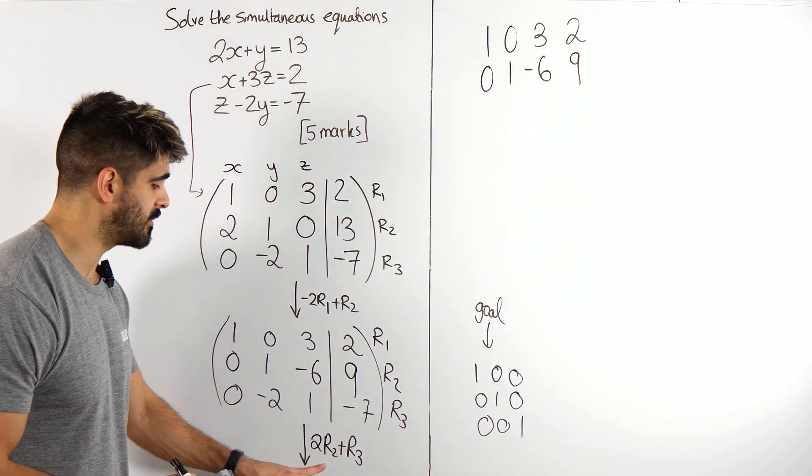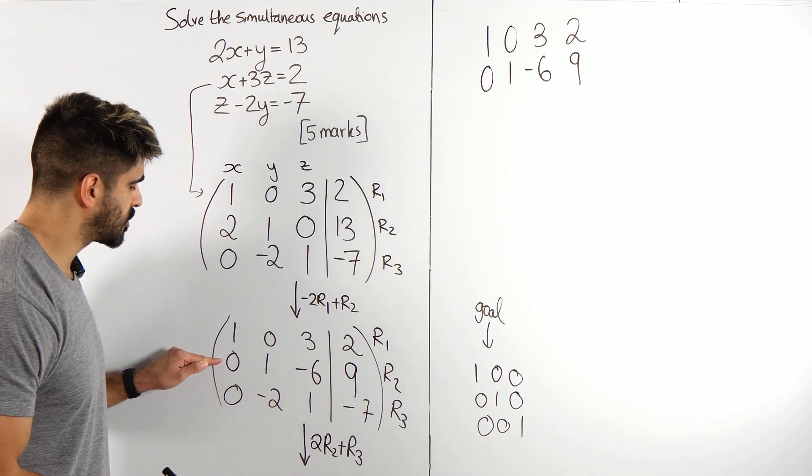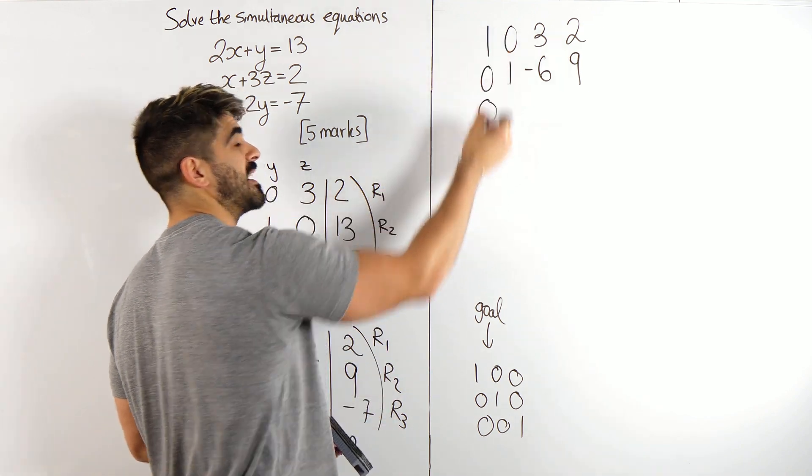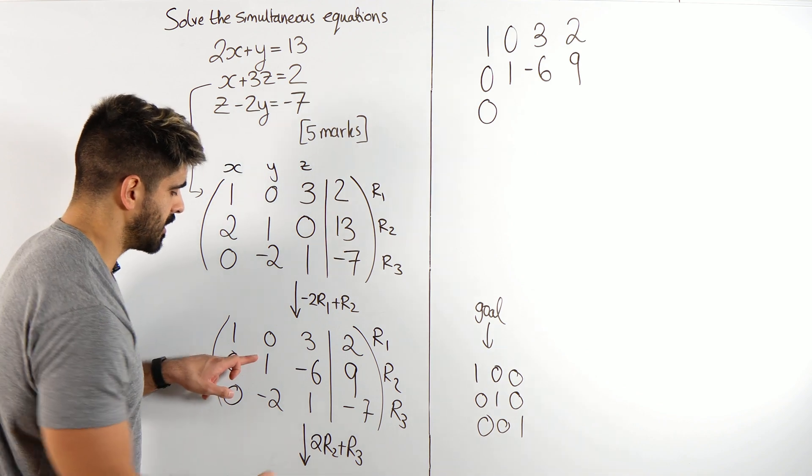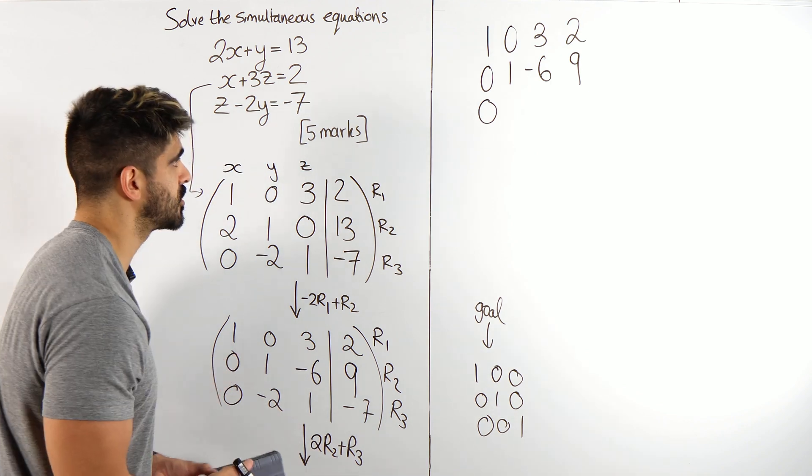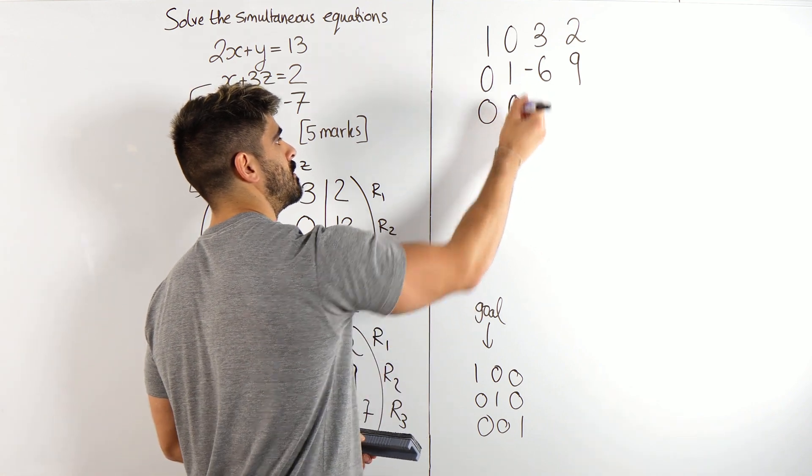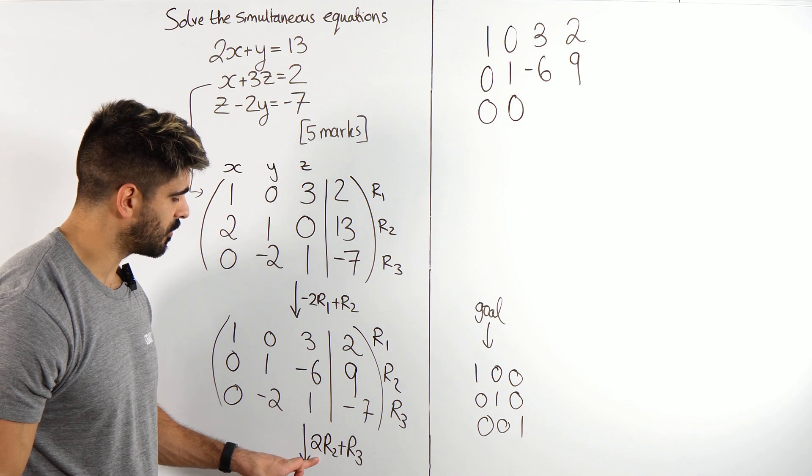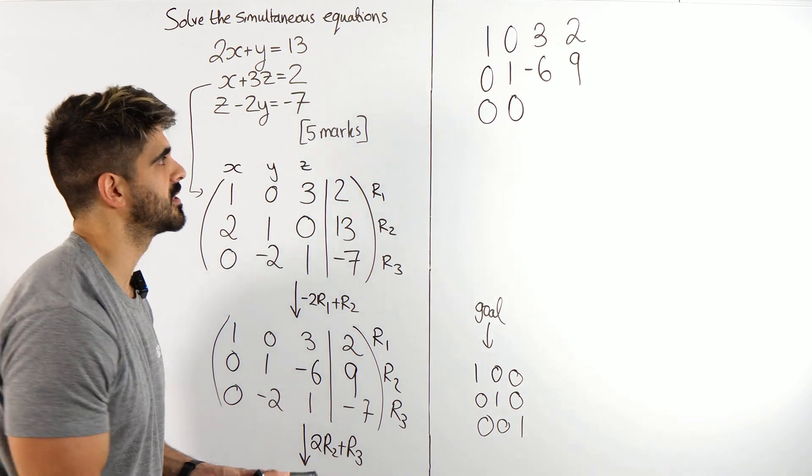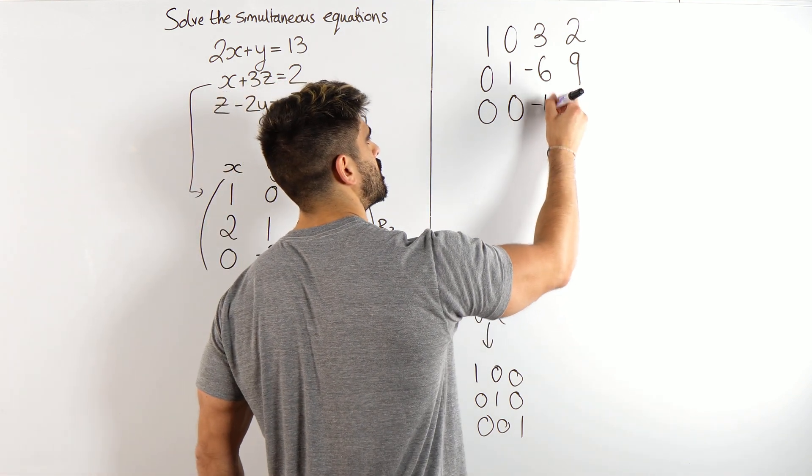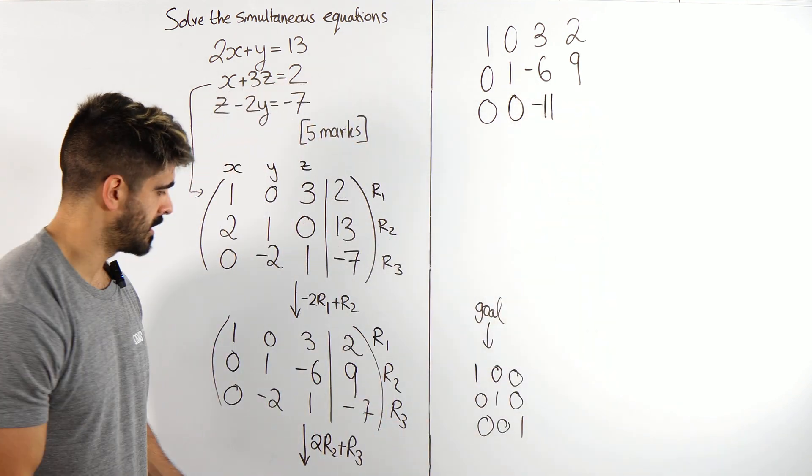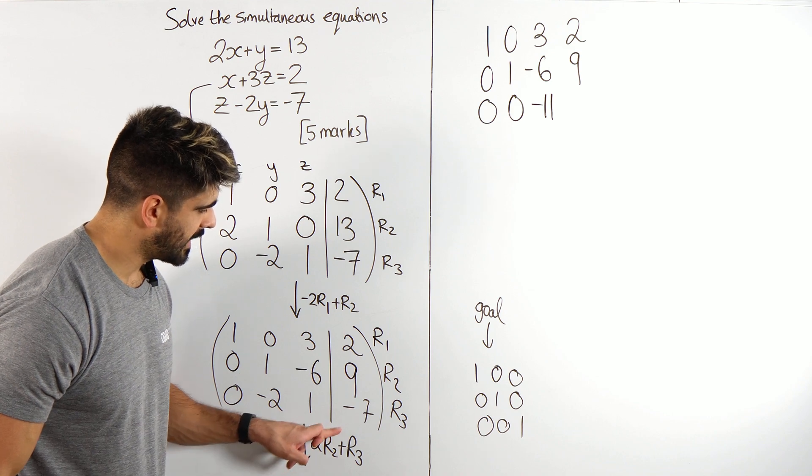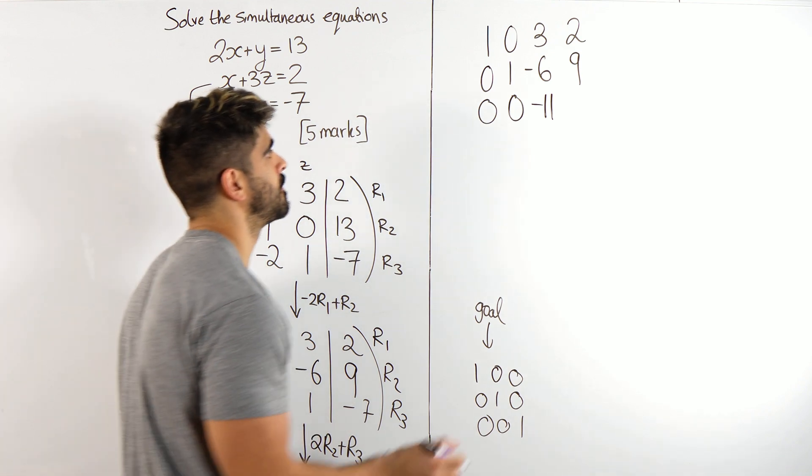Let's go through. We're going to times row 2 by 2 and add it to row 3. 0 times 2 is 0, plus 0 is 0. This would never be affected anyway because we've completed it. 1 times 2 is 2, minus 2, 0. Minus 6, times 2 is minus 12, plus 1. Minus 12 plus 1 is minus 11. 9 times by 2 is 18. 18 minus 7, 11. Nice.